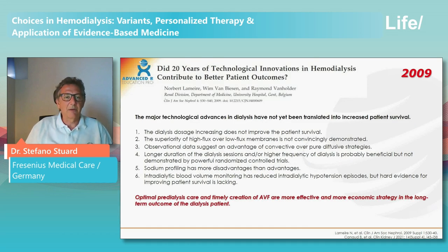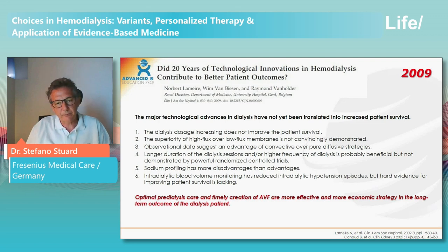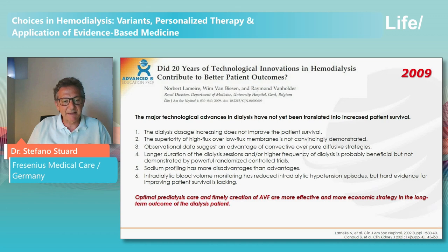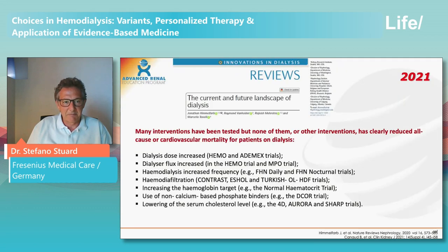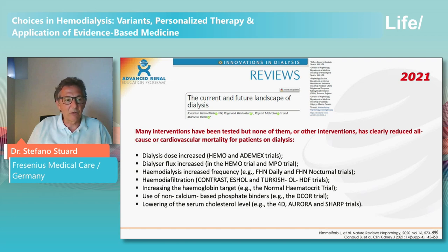I would like to mention two publications. The first, published in 2009, reviewed all innovations in the previous 20 years in the dialysis field. The authors stated that optimal pre-dialysis care and timely creation of arteriovenous fistulas are more effective and more economic strategies for long-term outcomes — a very sobering finding. A very recent publication in 2021 also showed that many interventions have been tested, but none has clearly reduced cardiovascular mortality for patients on dialysis. My aim in this presentation is to show that this is not completely true.